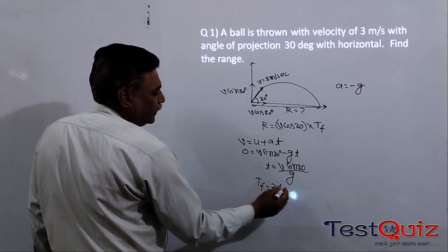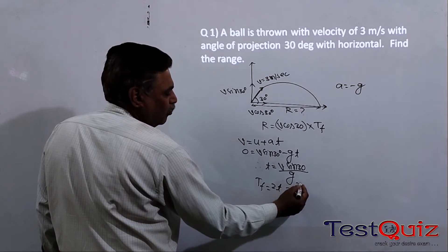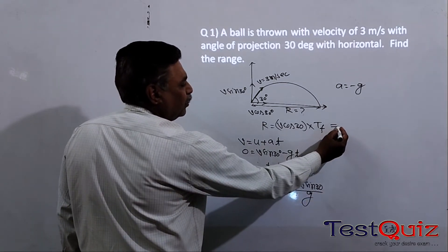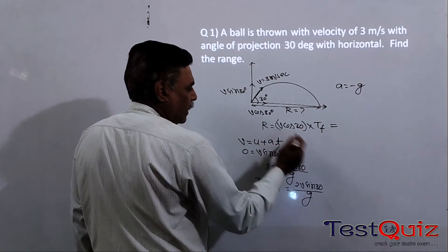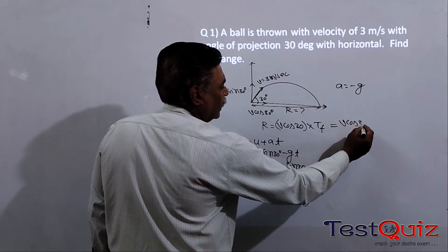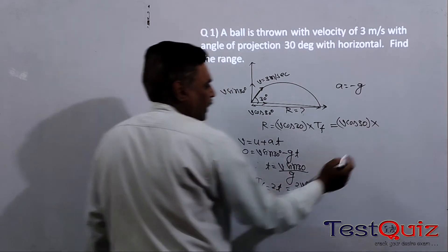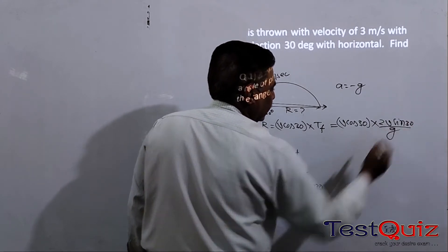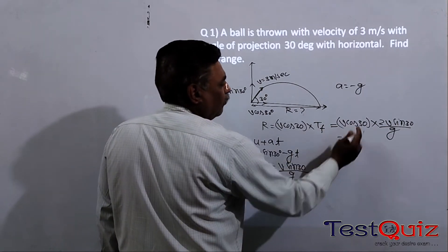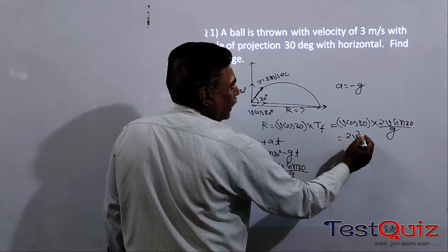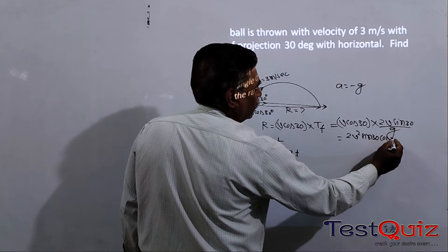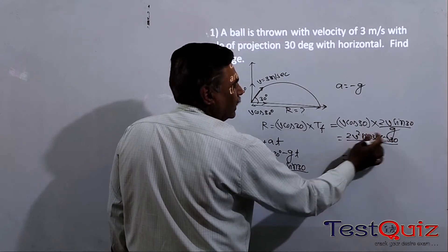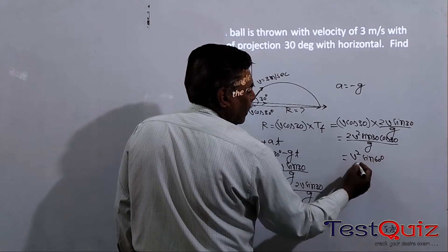The time of flight Tf equals 2t, which is 2V sin 30 divided by g. Substituting into the range formula: R equals V cos 30 into 2V sin 30 divided by g, which gives R equals 2V² sin 30 cos 30 divided by g. Using the identity 2 sin θ cos θ = sin 2θ, this becomes R equals V² sin 2θ divided by g, and sin 60 equals √3/2.